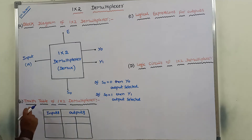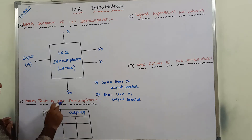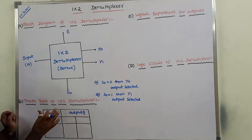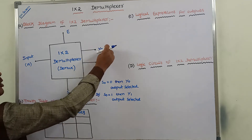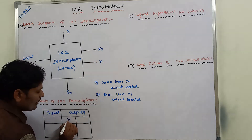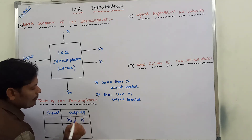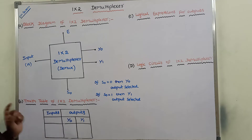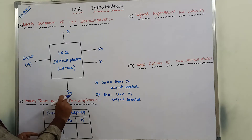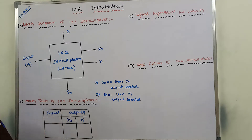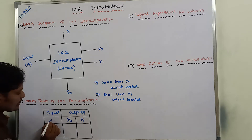Now, the truth table of the 1 by 2 demultiplexer. The truth table contains two parts: inputs and outputs. The outputs are Y0 and Y1. For the input column, we take the selection line S0 as the input variable.